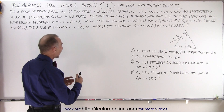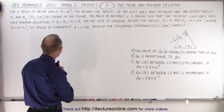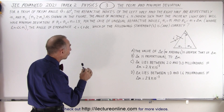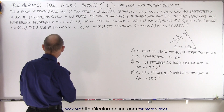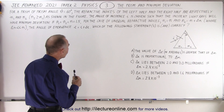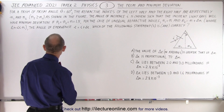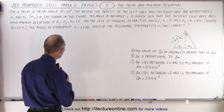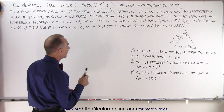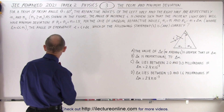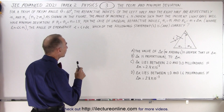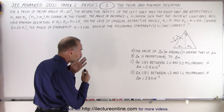It deals with a prism and the minimum deviation. For a prism of prism angle theta equals 60 degrees, the refractive indices of the left half and the right half are respectively n1 and n2, where n2 is greater than or equal to n1, as shown in the figure. The angle of incidence i is chosen such that the incident light rays will have a minimum deviation if n1 equals n2 equals 1.5. For the case of unequally refractive indices, n1 equals n and n2 equals n plus some small delta n, where delta n is much, much smaller than n. The angle of emergence e is i plus delta e. Which of the following statements are correct? There are four possible statements.